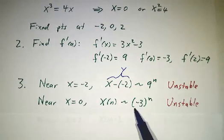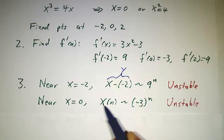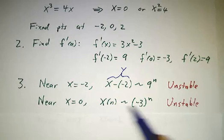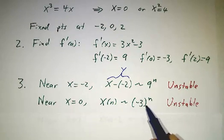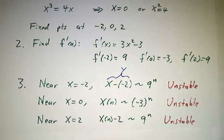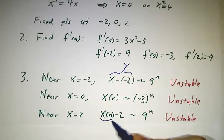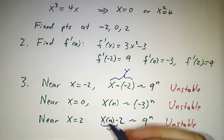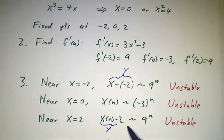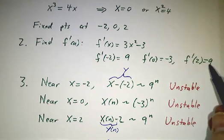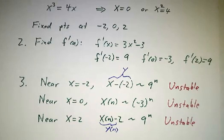Near x equals 0, it's growing like negative 3 to the n. y is then x minus 0, so that's the same thing as x. This y goes as negative 3 to the n. And near x equals 2, this is again y. y of n goes as 9 to the n because the derivative is 9. So if you know the derivatives, you know the behavior near the fixed points.